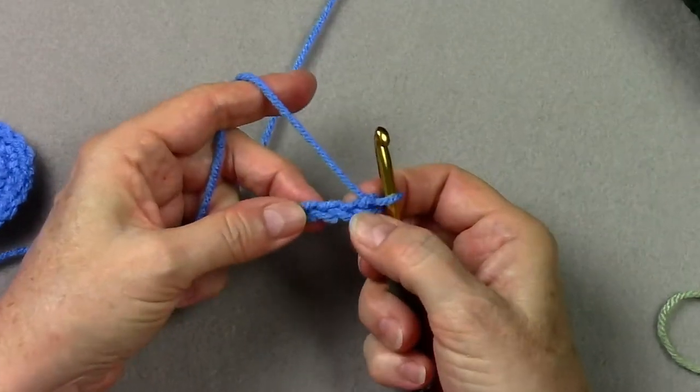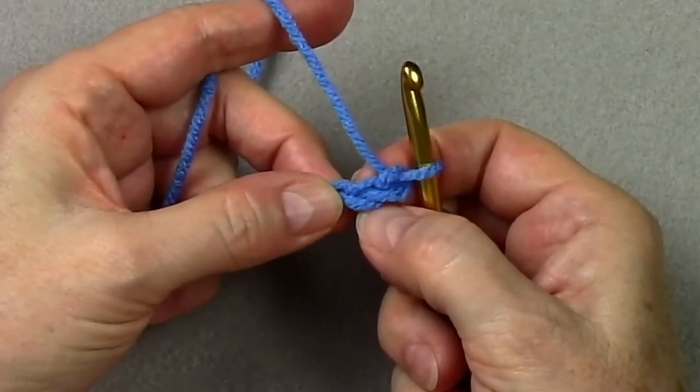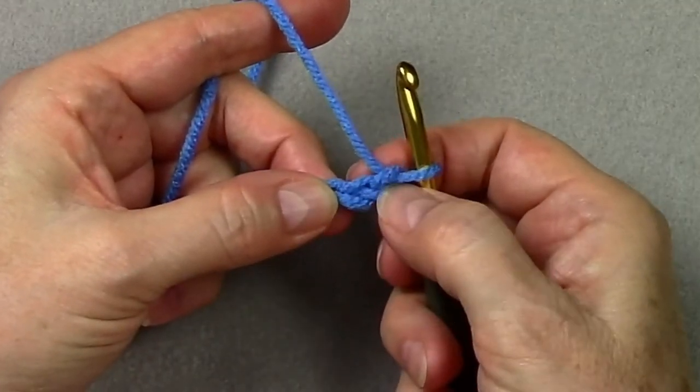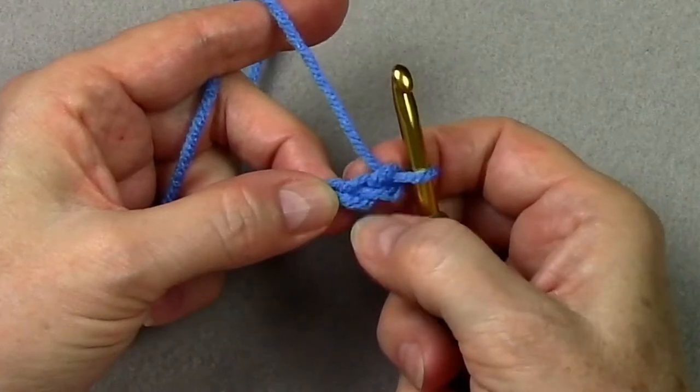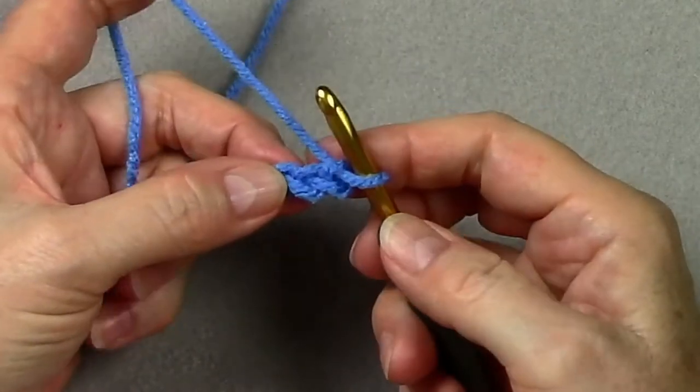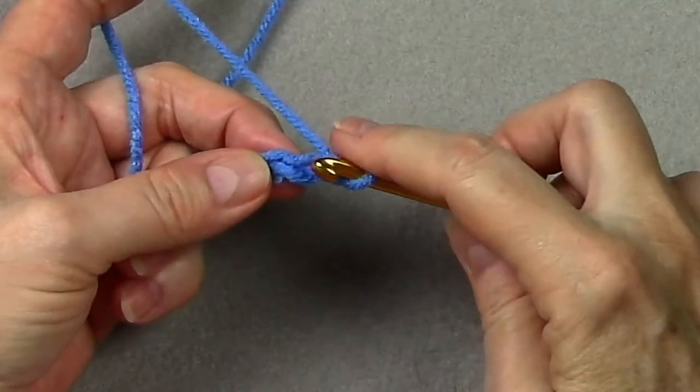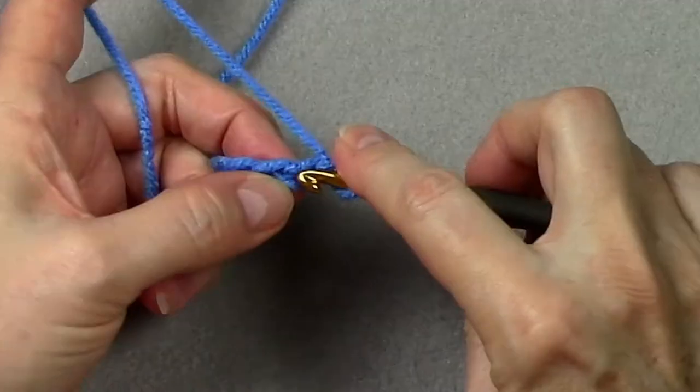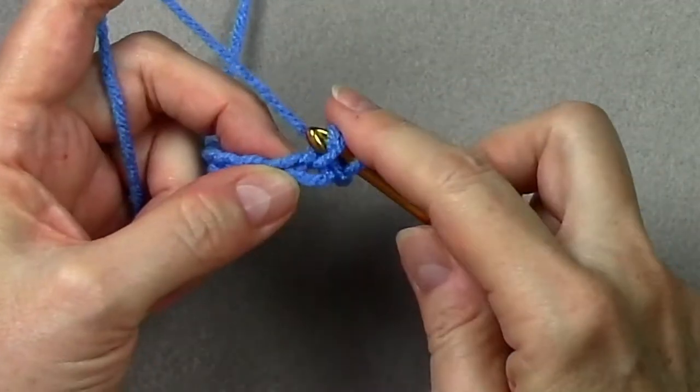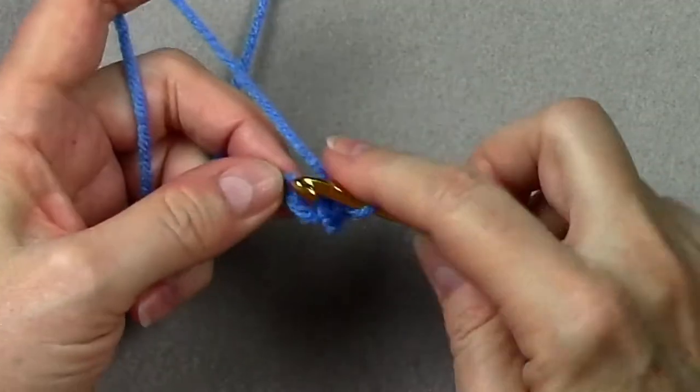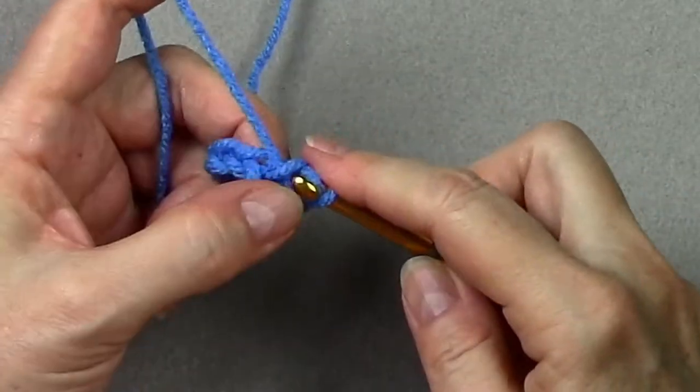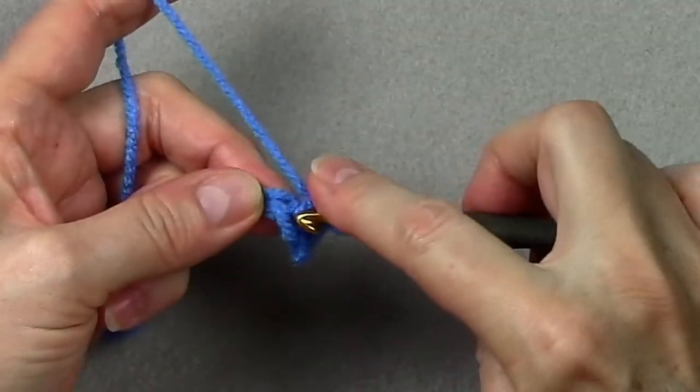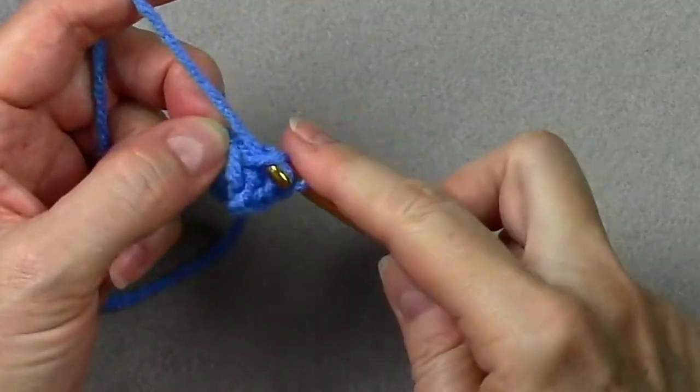You can start with increases here and end with increases and split them up. Or you can start with no increases and end with all of them or start with all of them and end with none. I'm going to start with half of my increases at the beginning. So I'm going to work in the second chain from the hook, and I'm going to do three single crochets into that second chain. And that will give me a little over half of my increases at this end.